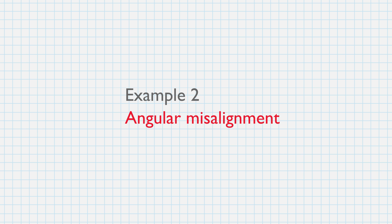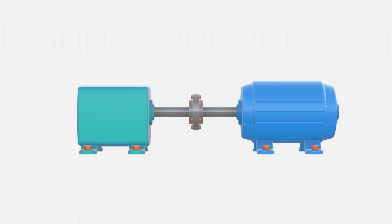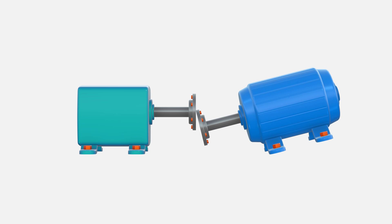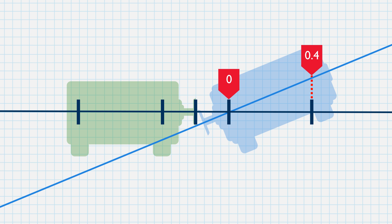In our next example, we will induce both offset and angular misalignment by raising only the back feet by 0.4 mm while leaving the front feet where they are. Now, the movable shaft's centerline is sitting 0.4 mm high at the back feet, while sitting at 0 mm of offset at the front feet.